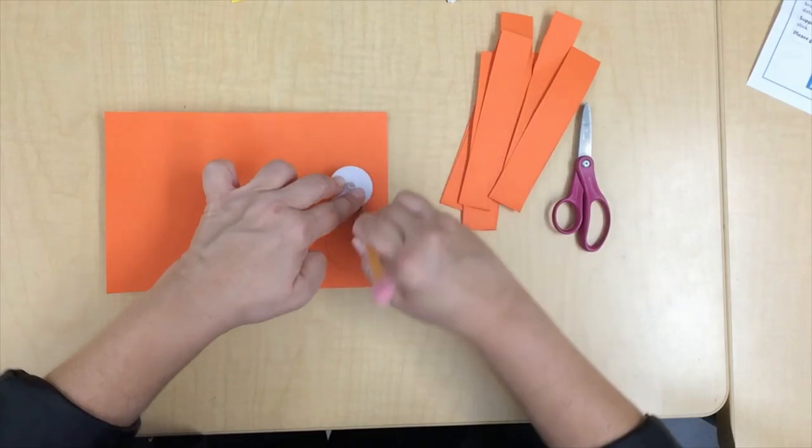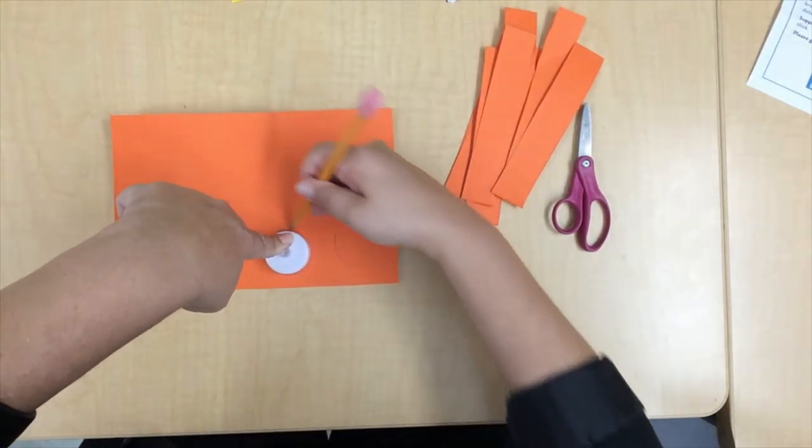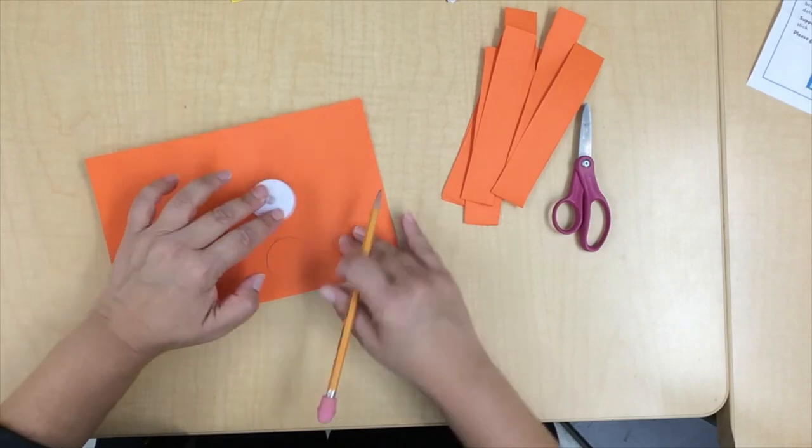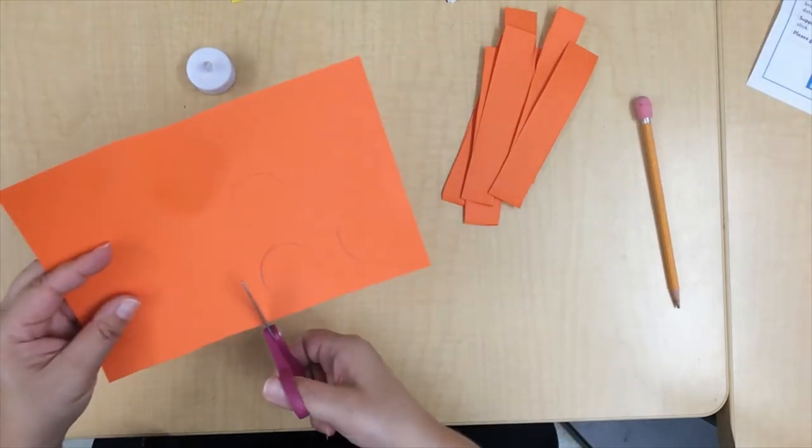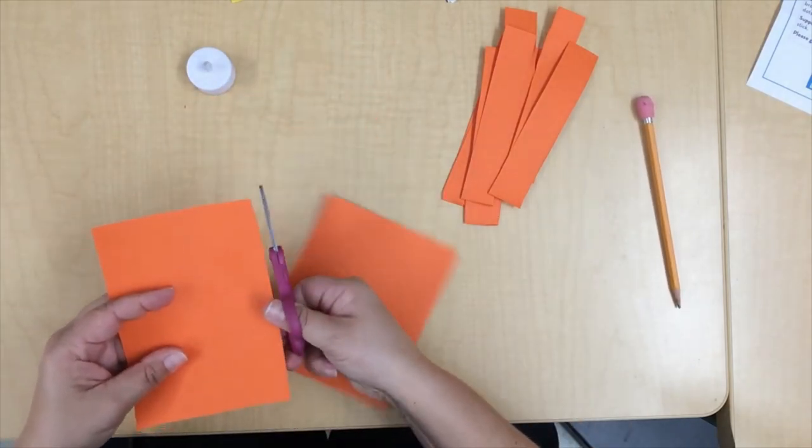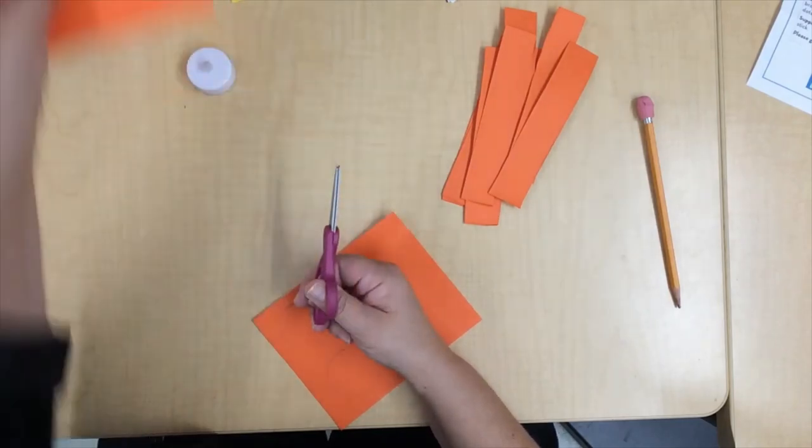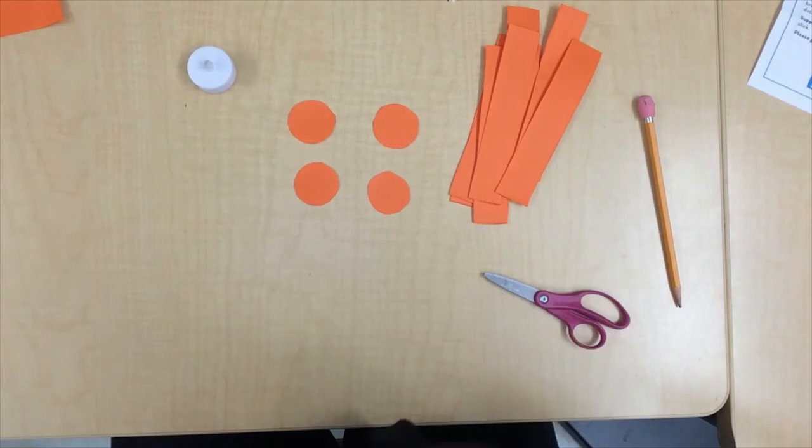All right, now grab the other sheet with your candle and you can save this piece for another project. And now cut these circles out.